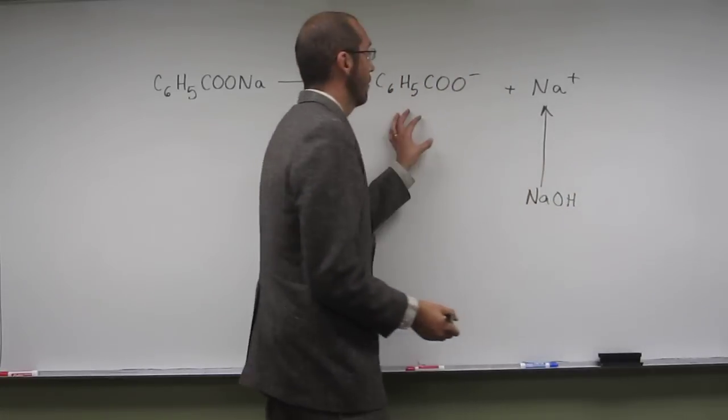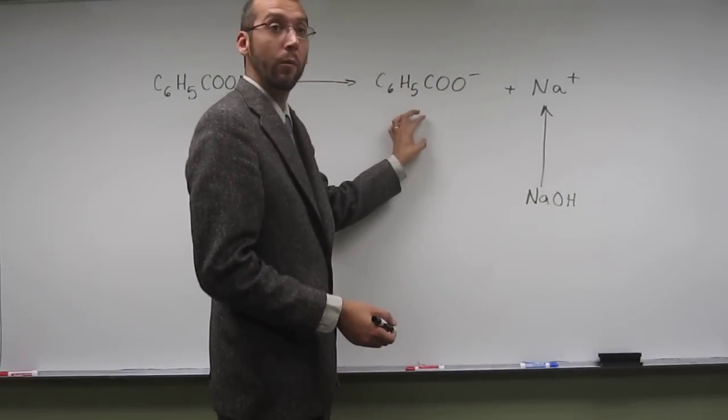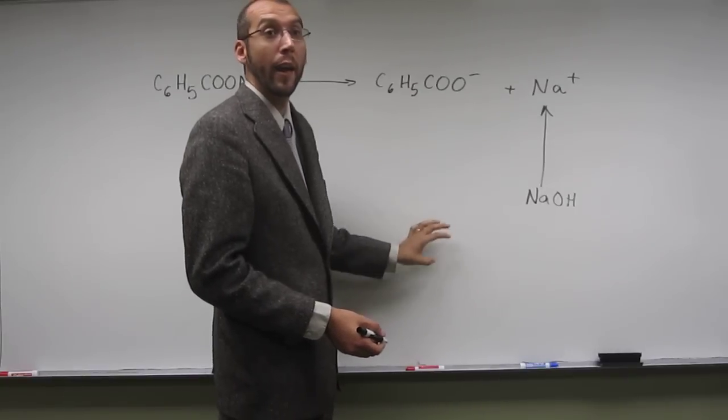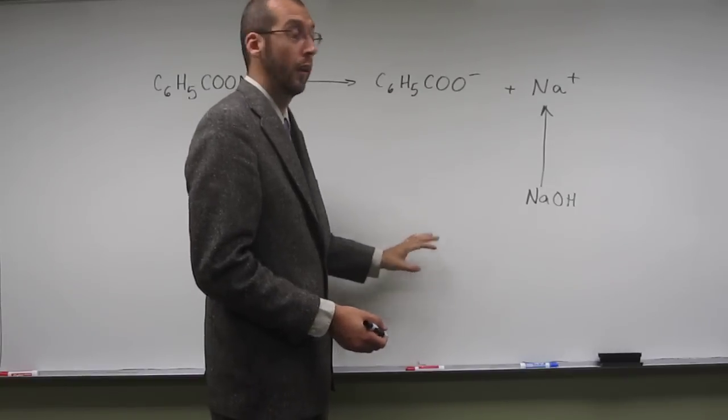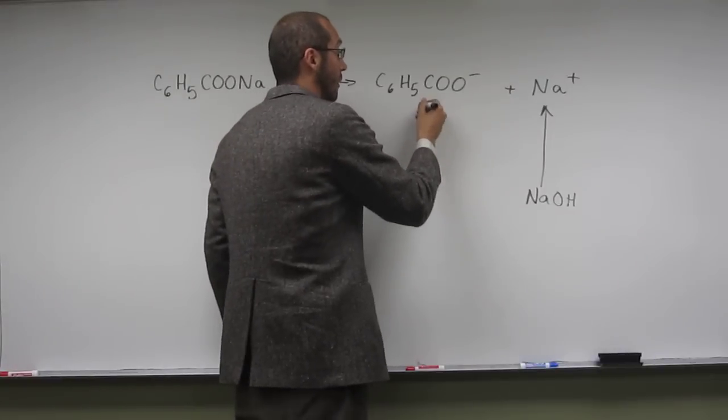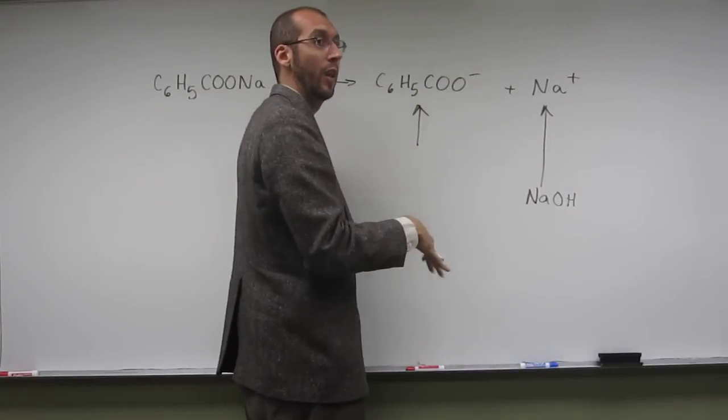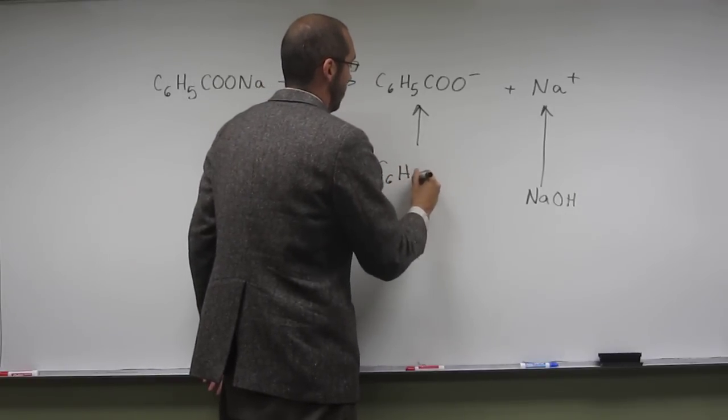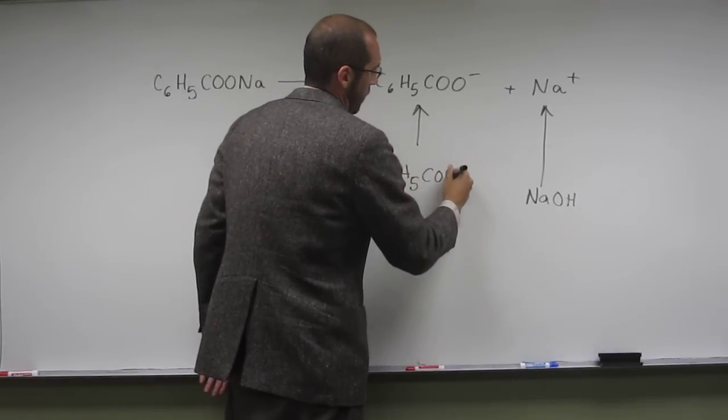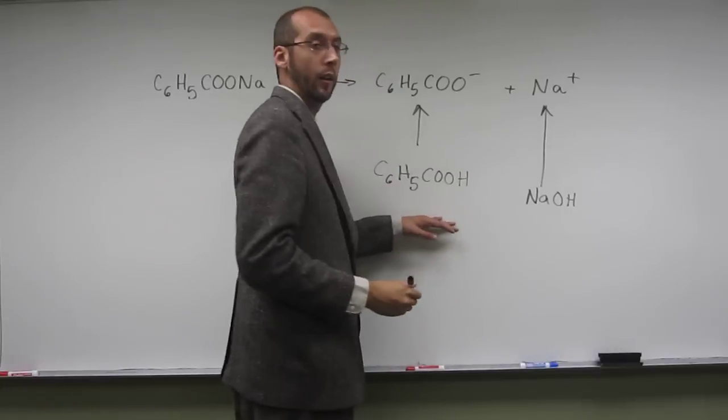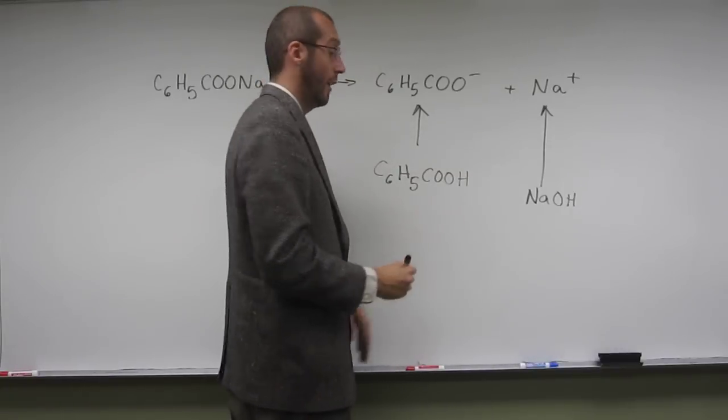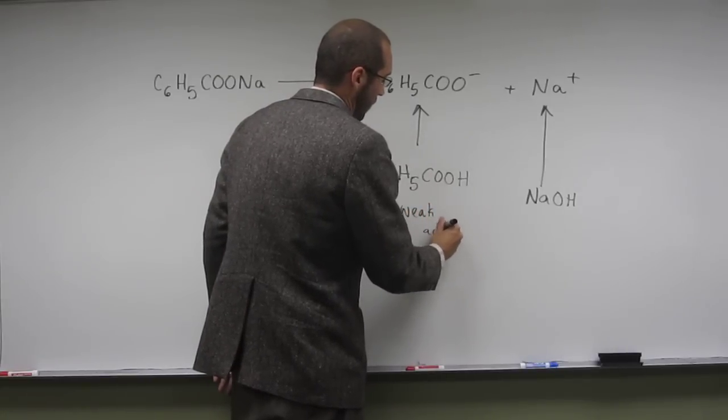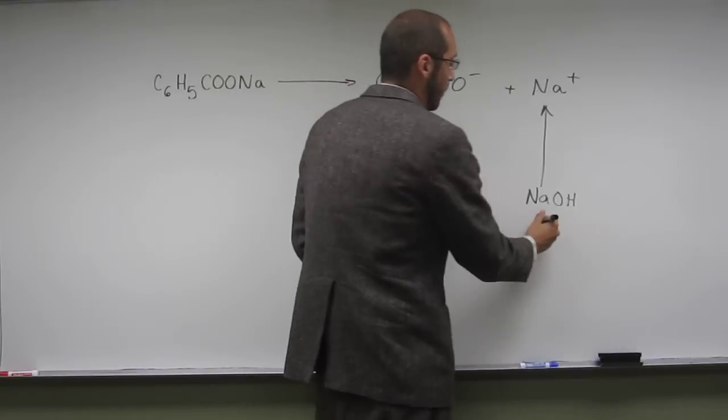Okay, so then what would this be a conjugate base of? This would be the conjugate base of some acid, right? A carboxylic acid. A carboxylic acid, very good. In this case, it's benzoic acid, but not that you need to know that since you're in gen chem. And that would be? A weak acid. A weak acid, right?